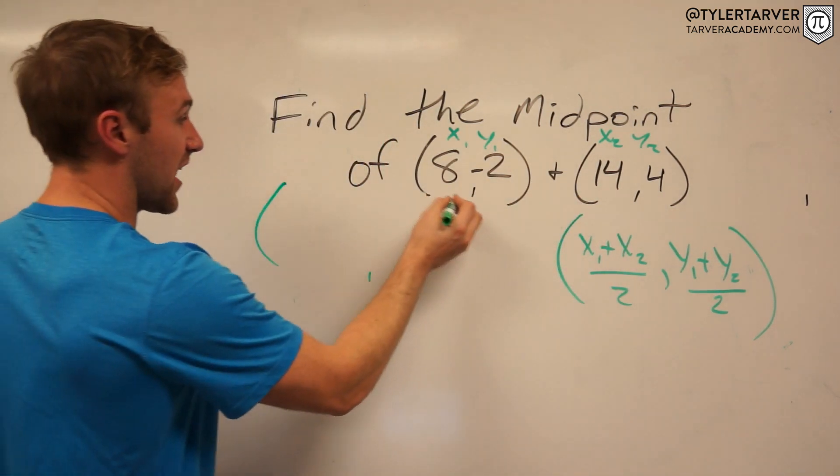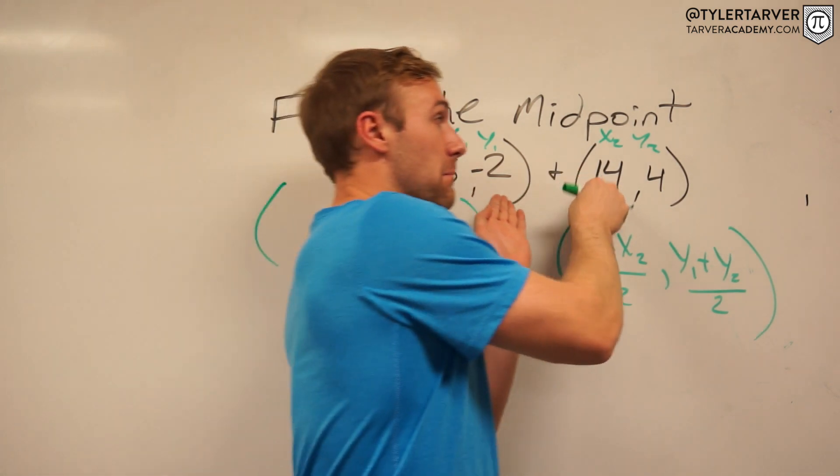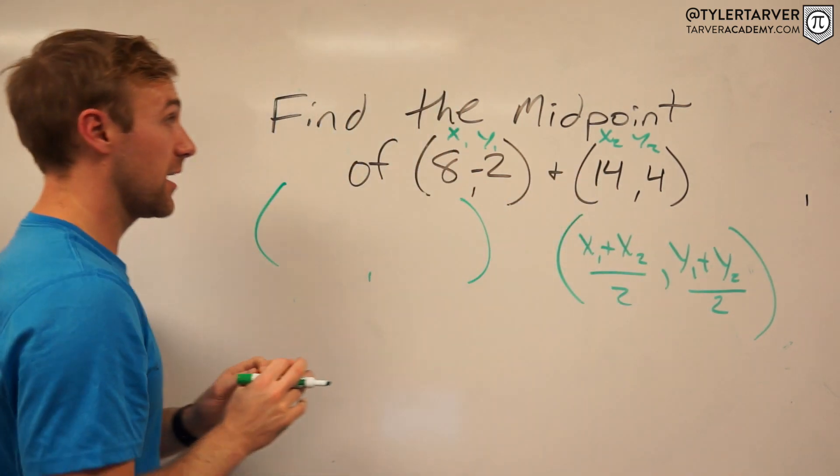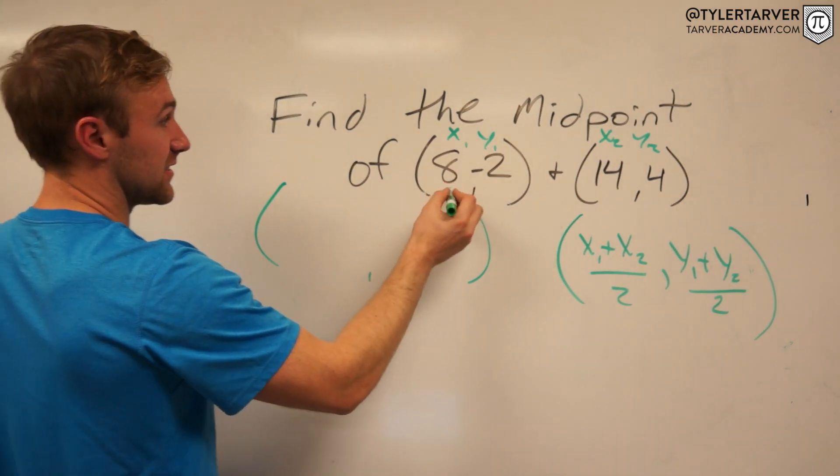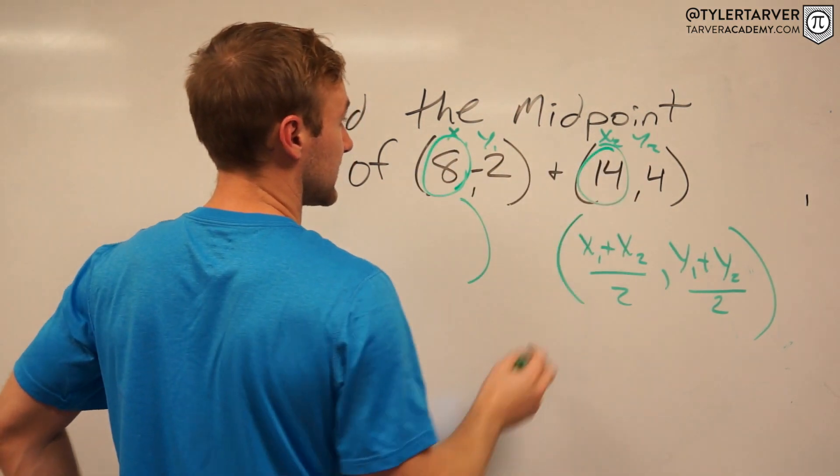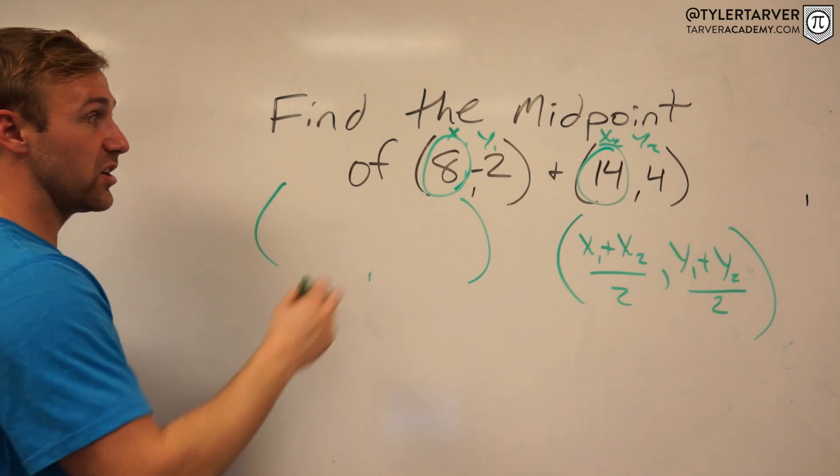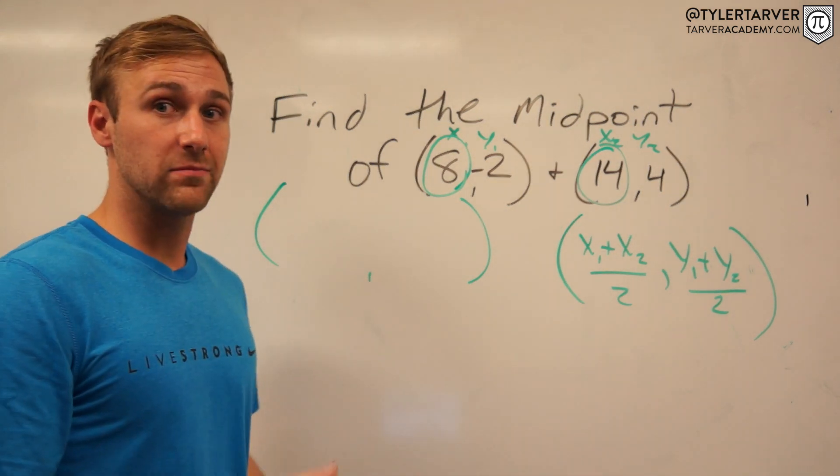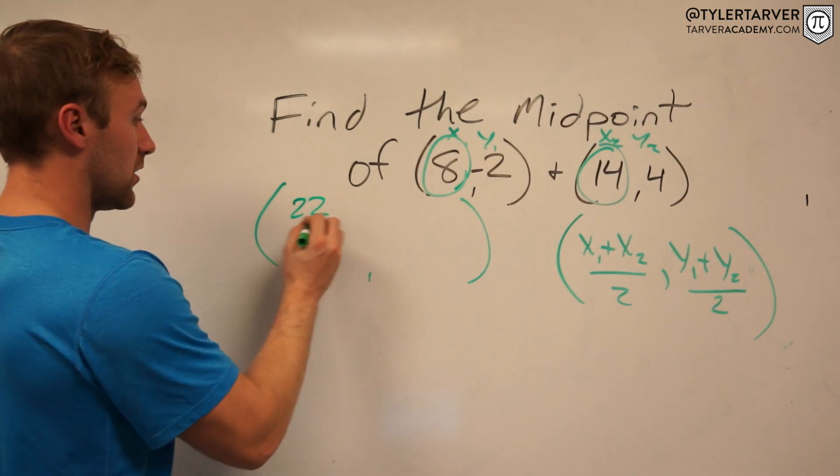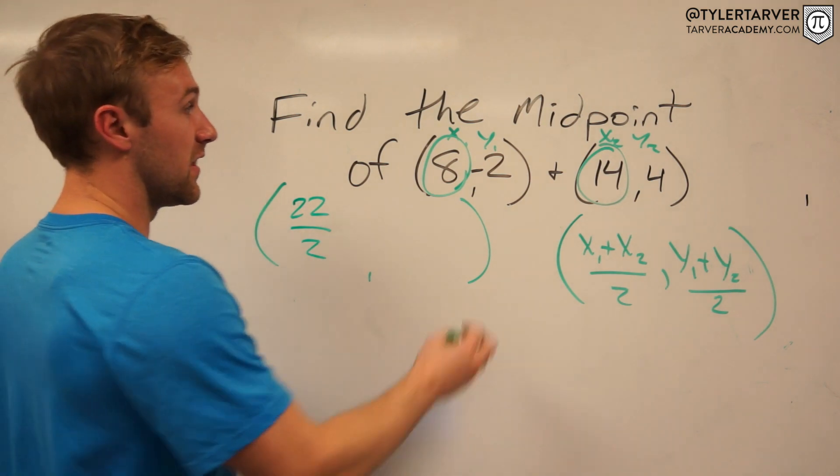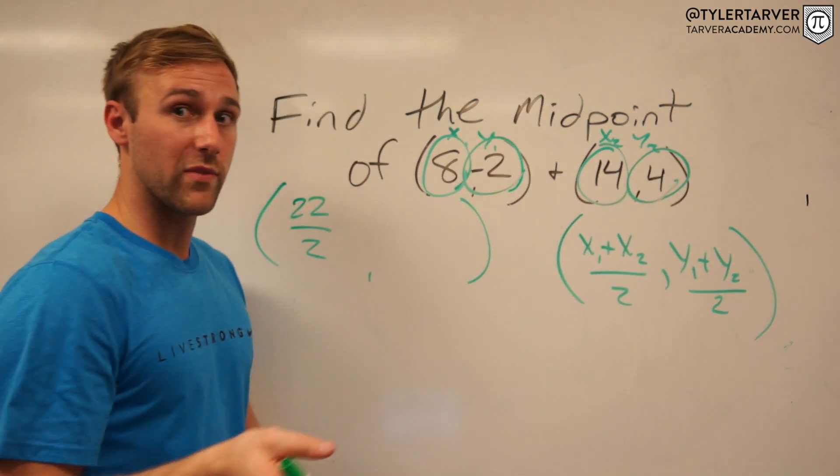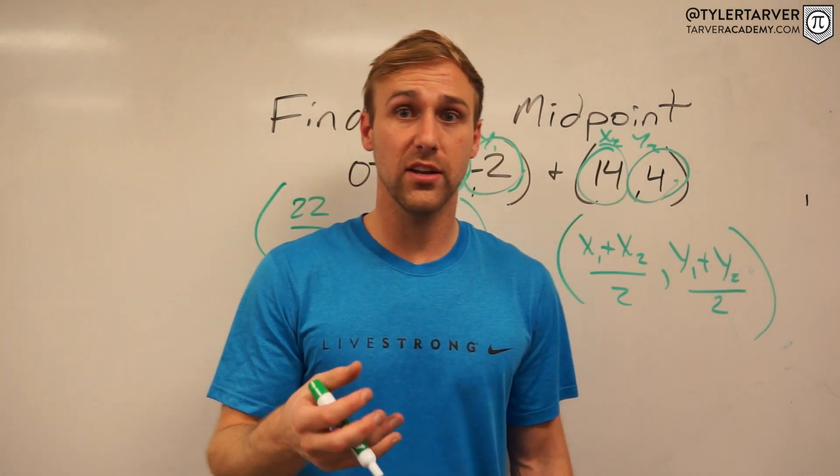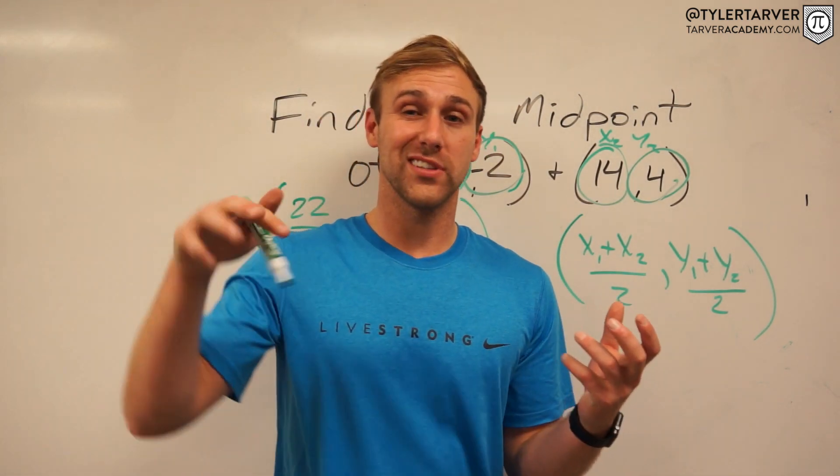We are essentially finding a coordinate that's in the exact middle of these two coordinates. So what I recommend: take your x's and circle them, add those together. What do you get? 8 plus 14 is 22, divide that by 2. Then we take our y's, negative 2 plus 4. Now it's a little tricky.